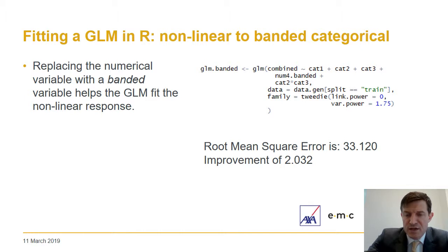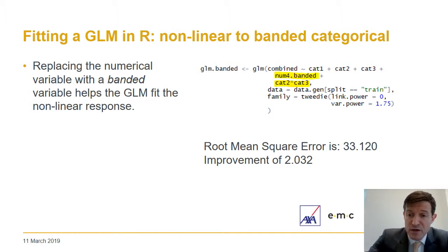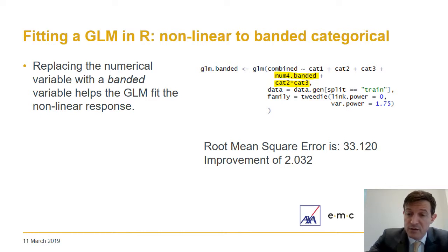In this GLM we keep the interaction and deal with the non-linear effect in num4 by banding the variable and turning it into a categorical variable. Rather than fitting a straight line to a polynomial, the GLM fits individual loads to different banded sections of that line. We do see an improvement in root mean squared error over the previous run.